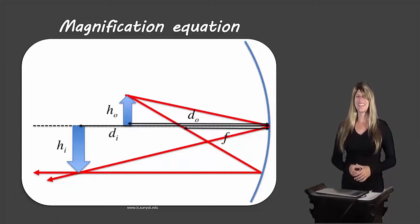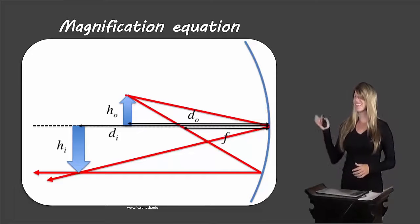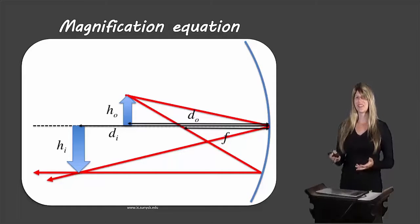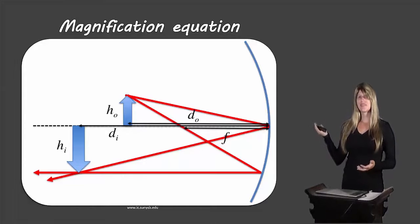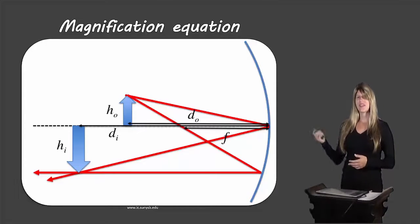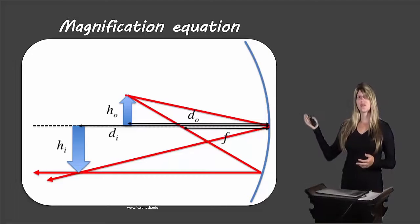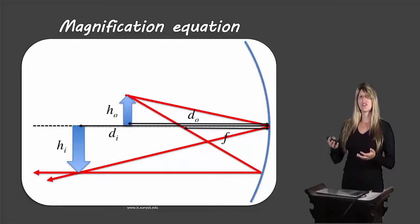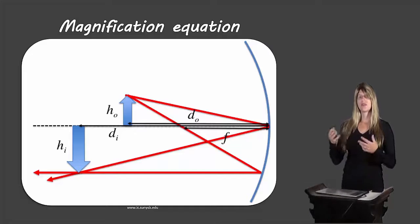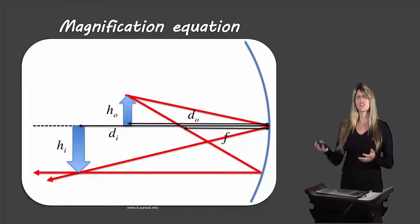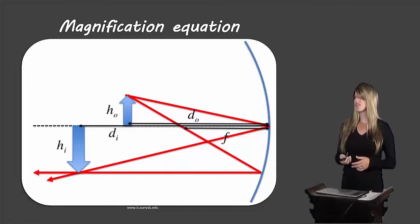Hello students, Ms. Swanson here. Today we're taking a look at the magnification equation for mirrors. We've seen this picture already showing us the reflection of an object in a concave mirror, and we can see the different descriptions of how the image looks and how the object looks. We're going to be talking about those conventions at the start of our lesson today.